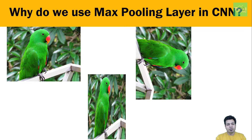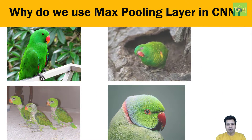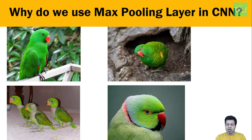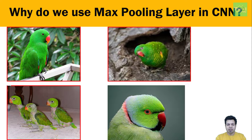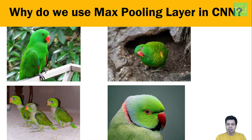Consider another scenario where we have different images of parrots as shown on the screen. They are present in different positions of the image, all looking in different directions — one is looking right, one is looking down, others are looking left, and another is looking right. They all have different backgrounds, different textures, and different lighting. Even with all these differences, our CNN model should still recognize the parrot correctly due to its unique features: green body color and red beak.